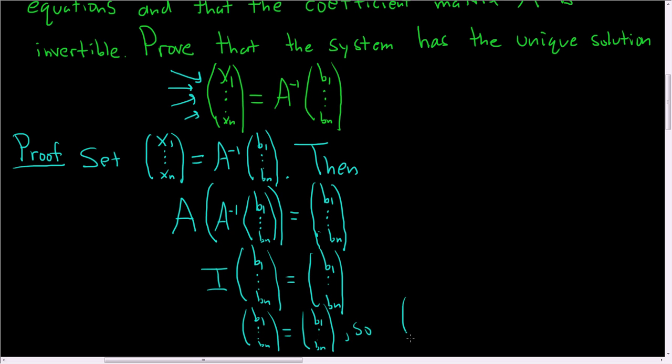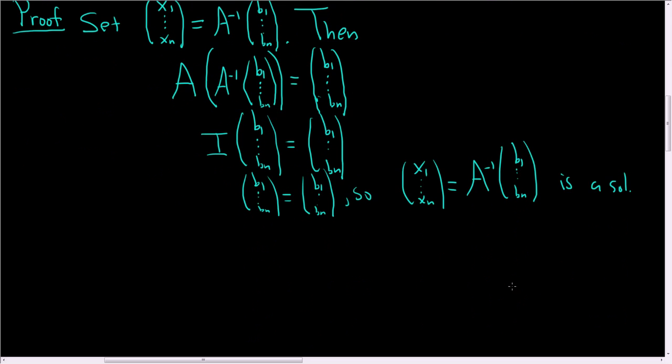So x1 dot dot dot x sub n equal to A inverse times B1 dot dot dot B sub n is a solution, right? So we've shown it is actually a solution. Now we just have to show that it's the only solution. So to do that, what we'll do is we'll take any other solution and then we'll show it must be equal to this one.